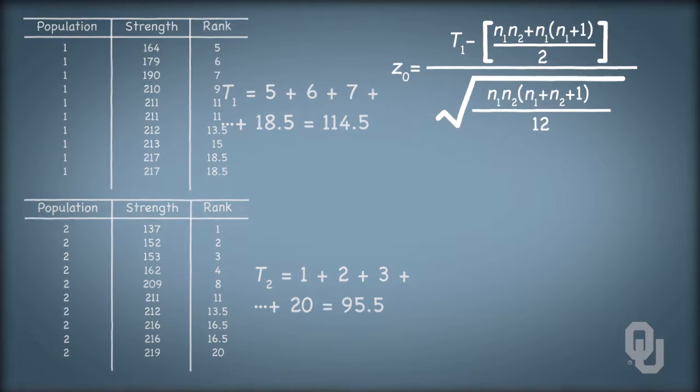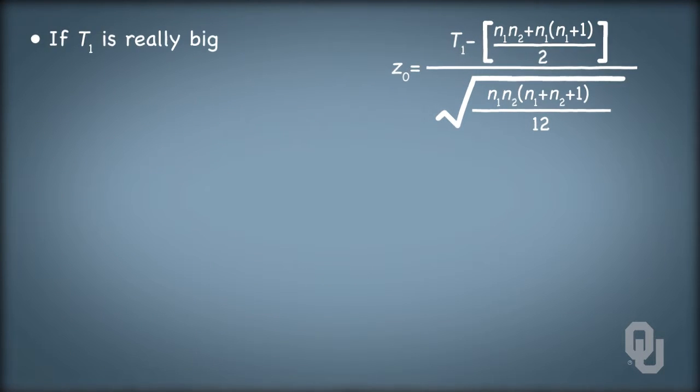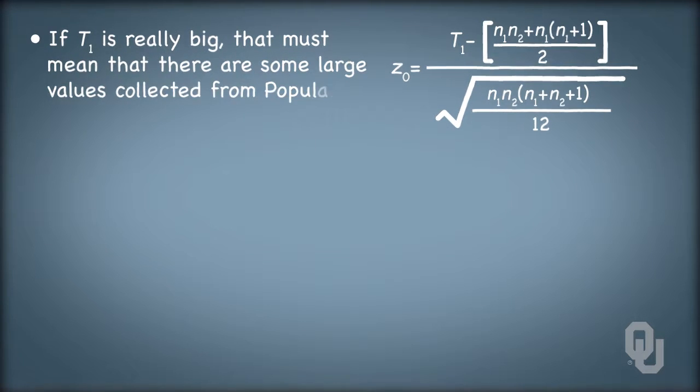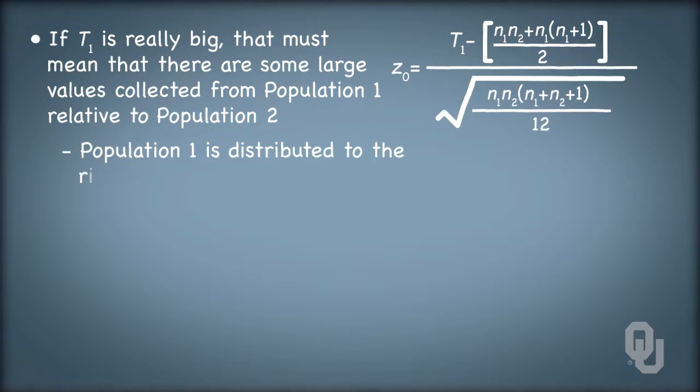Think about what we're doing. If T1 is really big, if it's a lot larger than its expected value, that must mean that there are some very large values collected from population one relative to population two. As such, we might find that population one is distributed to the right of population two.